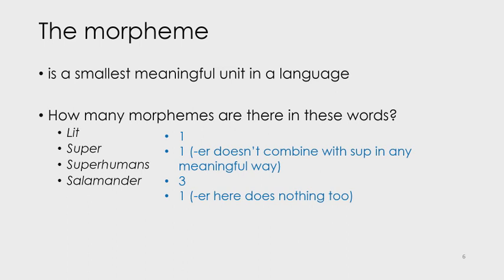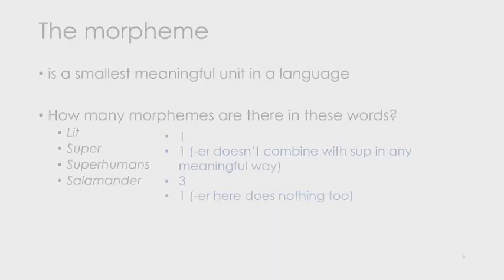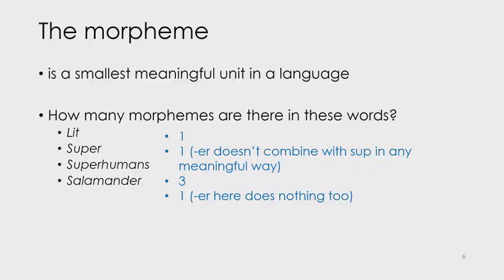Lit cannot be further broken down and is therefore one morpheme. And while there's an -er in super, it does not contribute any meaning to super, nor does it combine with 'soup' in any meaningful way, and super on its own is one morpheme. There are three morphemes in superhumans: super, human, and the plural -s. Finally, while salamander is a longish word and we see -er again, the -er here does nothing to contribute to the combined meaning of salamander, and is therefore not a real morpheme. Therefore, there is only one morpheme in salamander, even though it's almost as long as the word superhuman.